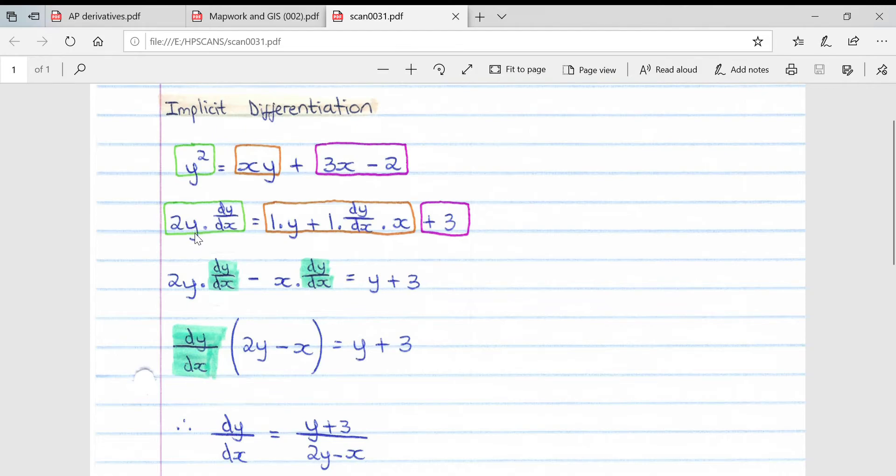This equals xy, which is a product rule. We derive the first term which is x—derivative of x is 1 multiplied by leave the second term which is y, plus derive the second term which is 1 multiplied by dy over dx.